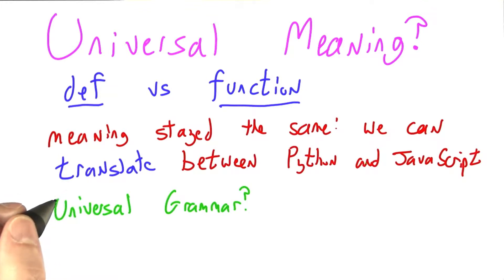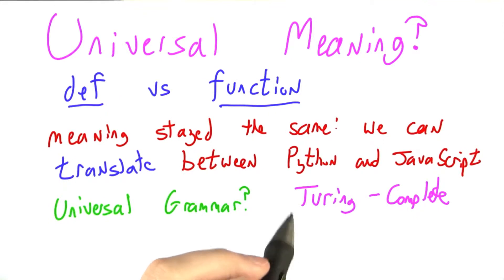but we will see, either in this class or in subsequent ones, that for computer languages like Python or JavaScript, C and C++, Visual Basic, C Sharp, OCaml, Free Basic, they're all the same in a very strong sense. They're all Turing complete.